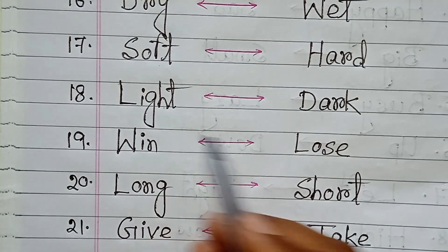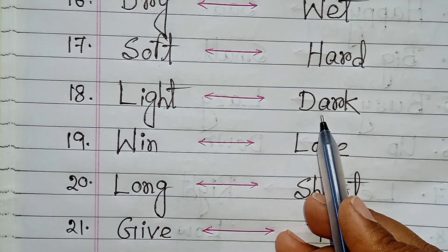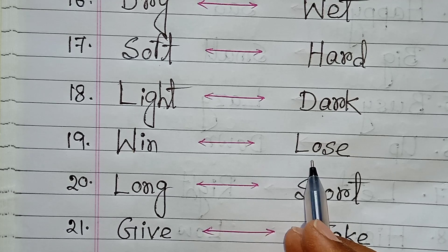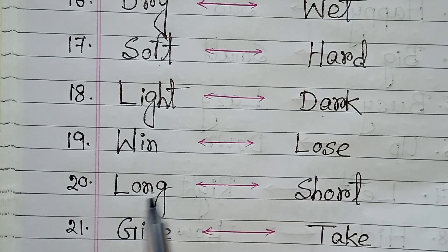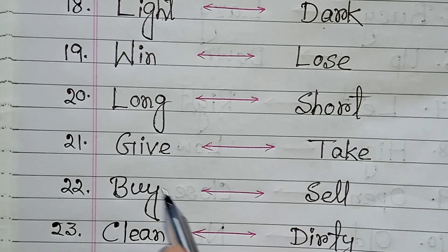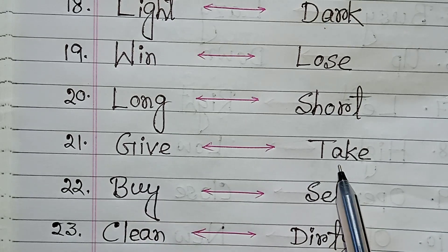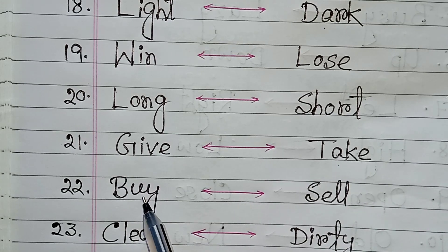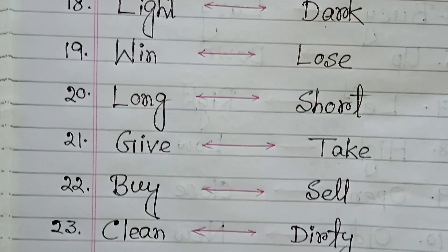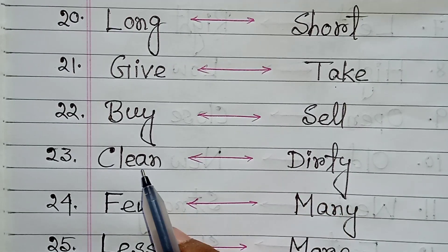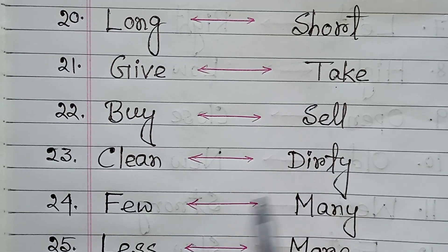Light, dark. Win, lose. Long, short. Give, take. Buy, sell. Clean, dirty.